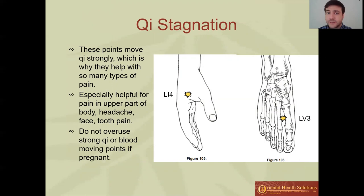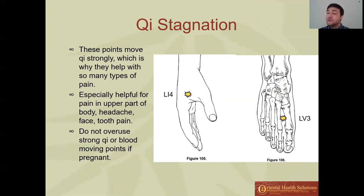Chi stagnation is the most common cause for pain. The two most commonly used points are Large Intestine 4 (Hegu) and Liver 3 — they strongly move chi. Any chi stagnation type problem, they help with — including irritability or alternating symptoms. They're helpful for achy pain that is maybe more fixed or moving, but not super severe, pinchy, stinging, or burning. This combination I use a lot for head, neck, and tooth pain, which are often chi stagnation type pains.